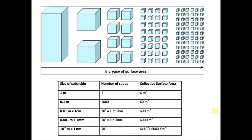To give an example: starting with one bulk cube of size 1 meter, the collective surface area is 6 square meters. If I reduce the size to 0.1 meter, I can fit 1000 cubes in the same volume and surface area increases to 60 square meters. Reducing further to 1 centimeter, I can fit 1 million cubes and the collective surface area becomes 600 square meters. At 1 millimeter size, 1 billion cubes fit and the surface area becomes 6000 square meters.